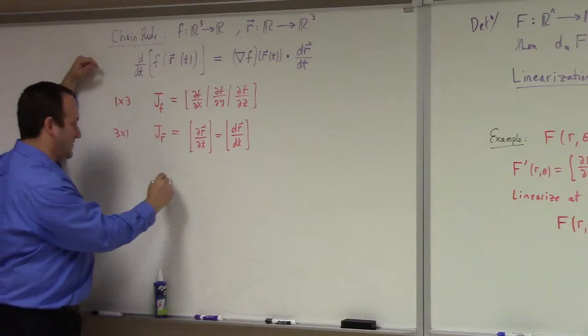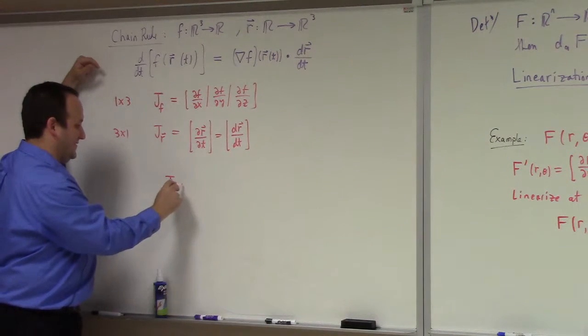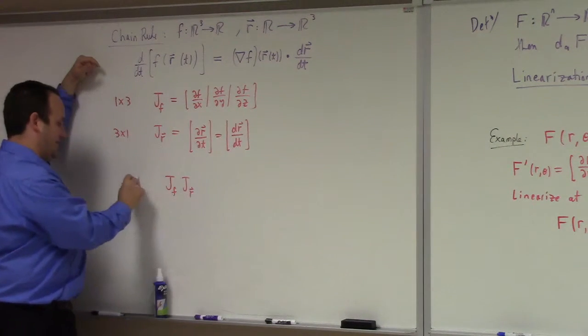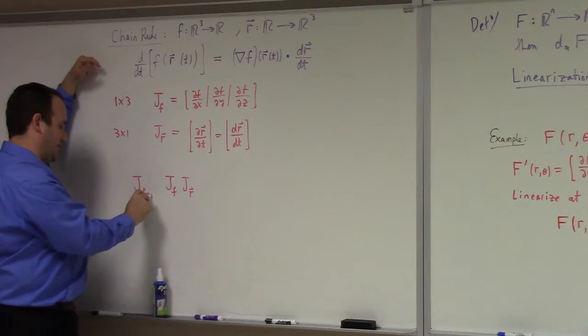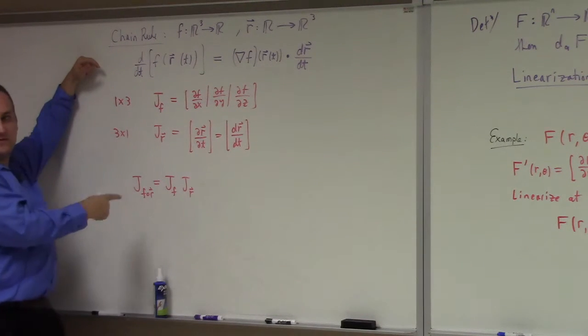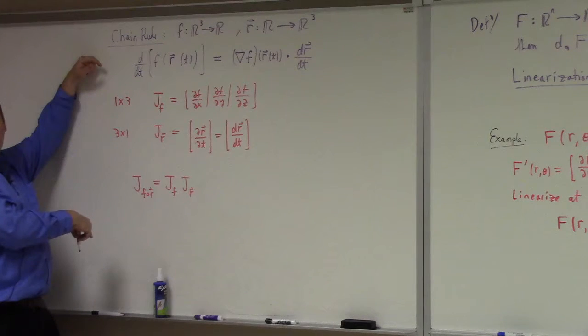So what happens when you multiply the Jacobian of F times the Jacobian of R, right? That should be the Jacobian of F composed with R. That's what the chain rule... Here's the chain rule written in Jacobian notation.